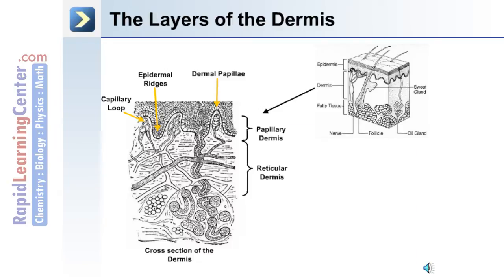Here is an enlarged image of the dermis to reveal the different layers. The papillary dermis is in conjunction and in a border with the epidermis. The next deeper layer is the reticular dermis. Also evident on this image is the dermal papillae which extend up into the epidermis, and the epidermal ridges which extend down into the dermis. Within the dermal papillae are capillary loops.